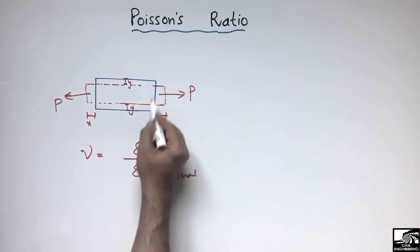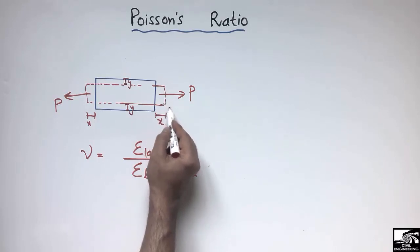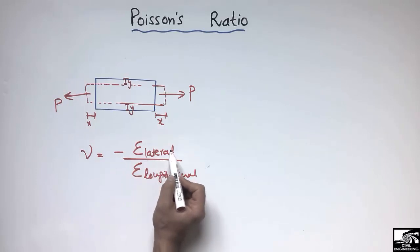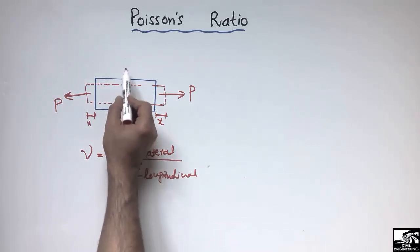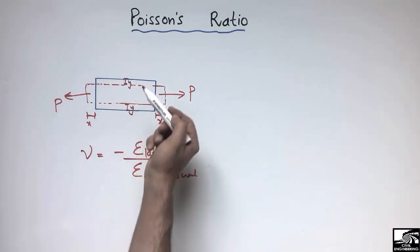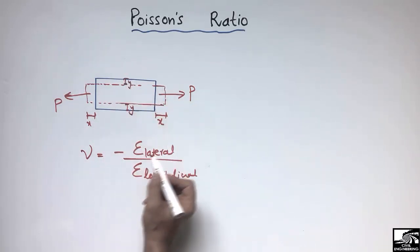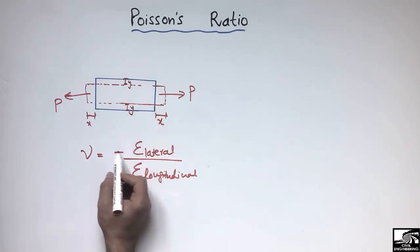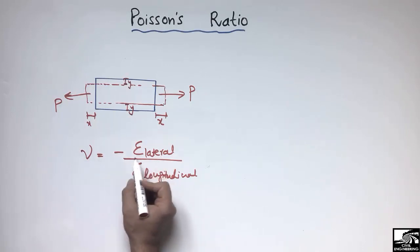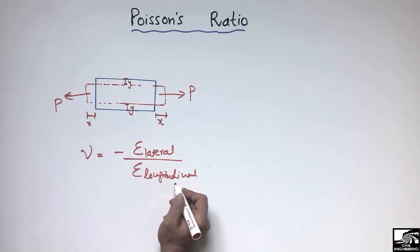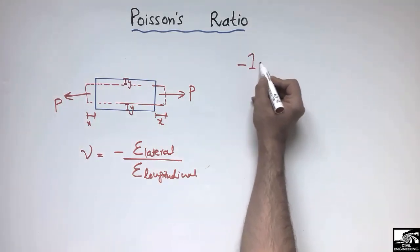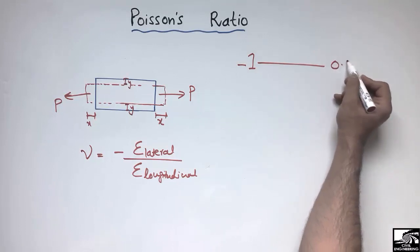The longitudinal direction shows expansion of this material. A negative sign is used because the strain in the lateral direction is due to compression, and compressive strains are treated as negative. Multiplying negative by negative gives positive, that's why the negative sign is included. So it is the negative ratio of the lateral strain to the longitudinal strain. The Poisson ratio range for materials is from minus 1 up to plus 0.5.